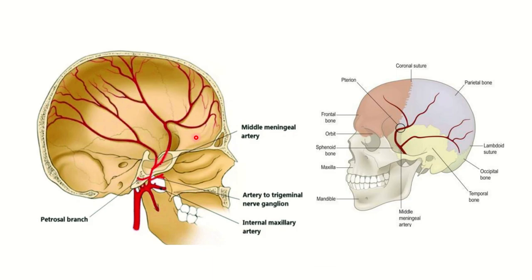The typical clinical picture includes an initial period of unconsciousness, followed by a lucid interval where the patient regains consciousness, and then becomes unconscious again leading to death. We can see that the middle meningeal artery arises from another artery.